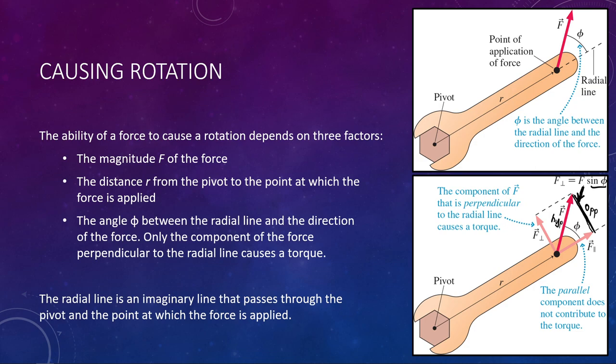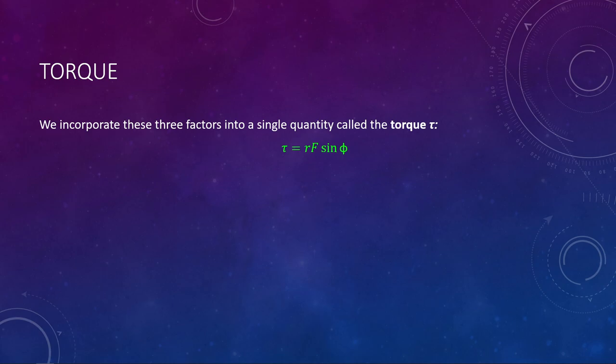Put those three things together and we have an equation for this new term: torque. Torque is given by the distance R between the pivot point and the location of the force, the magnitude of the force F, and sine of the angle phi — where phi is defined as the angle between the radial line and the direction of the force. We now have an equation for torque, though we haven't yet defined what torque actually is.